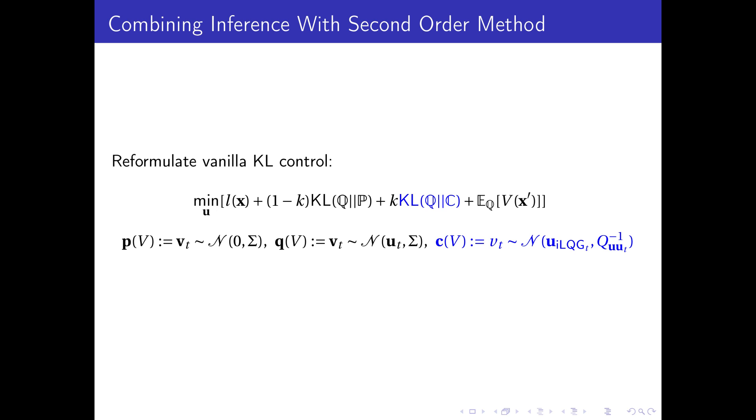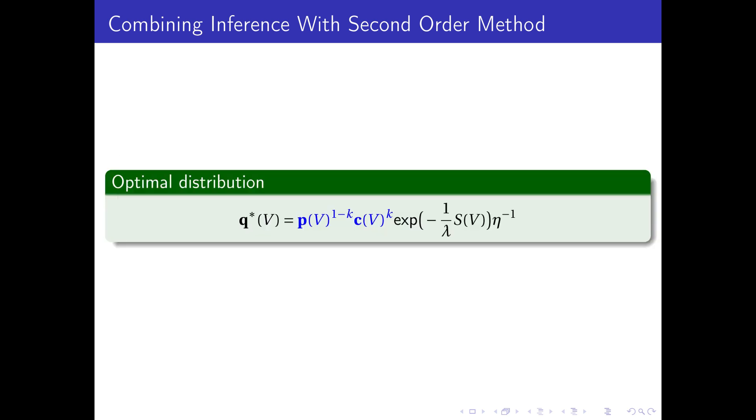We obtain this approximate distribution using maximum likelihood estimation. The final optimal distribution takes the form of a joint factor between the distribution of the passive dynamics and the approximate ILQG distribution parameterized by the value function.